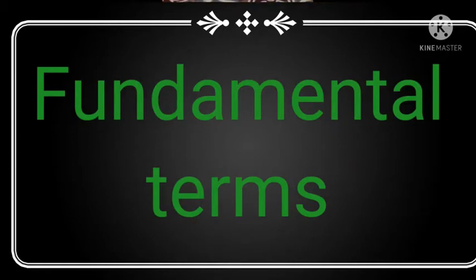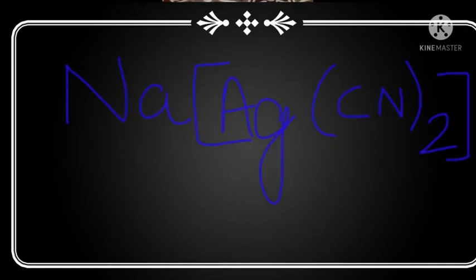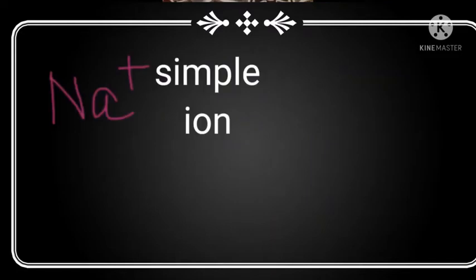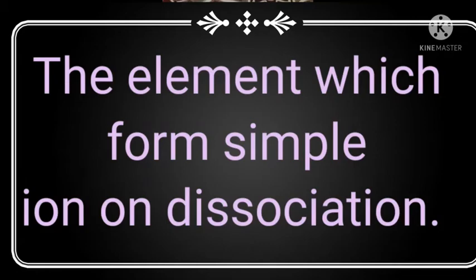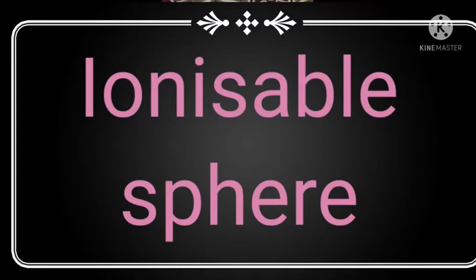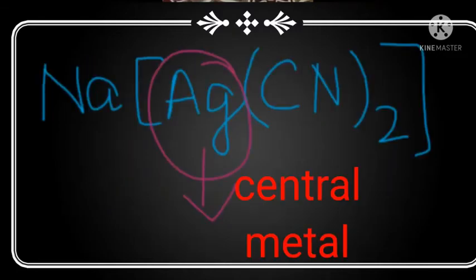Again I am taking the same example, sodium argento cyanide. When we dissociated this salt, sodium formed a simple ion, so in this complex sodium is considered as an ionizable sphere. The element which forms simple ion on dissociation is known as ionizable sphere. Here Ag, silver, is considered as a central metal.